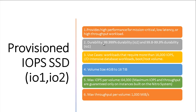Use cases for Provisioned IOPS SSD include workloads requiring more than 16,000 IOPS, IO-intensive database workloads, and boot/root volumes. Volume size ranges from a minimum of 4 GB to a maximum of 16 TB. Maximum IOPS per volume is 64,000, but maximum IOPS and throughput are guaranteed only on instances built on Nitro systems. Maximum throughput per volume is 1000 MB/s.